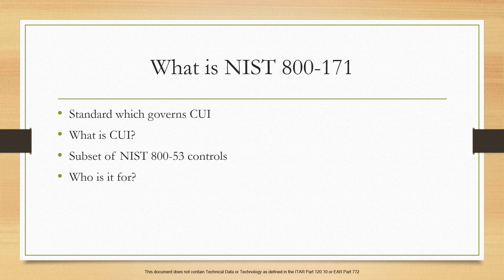Some examples of CUI can include emails or electronic files, specific blueprints or drawings, proprietary contractor information like sales orders and contracts, or even physical records — like printouts — in relation to a specific government contract.